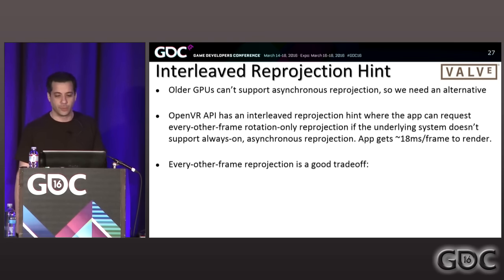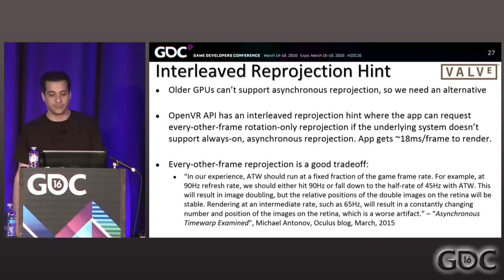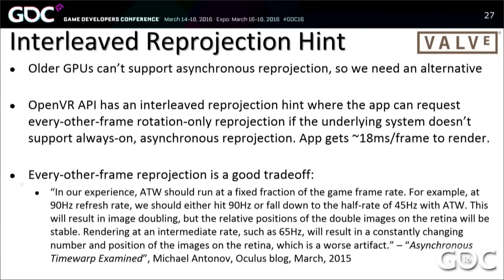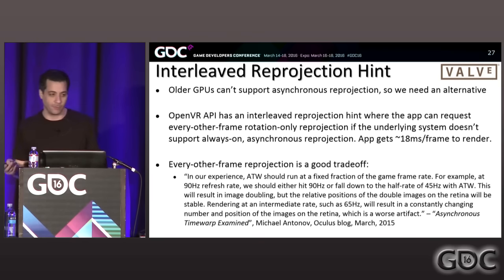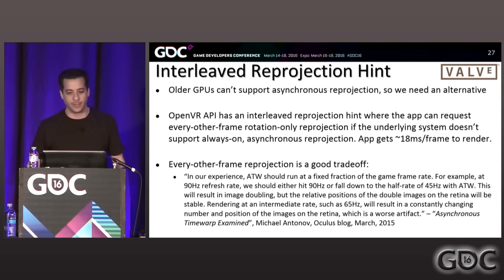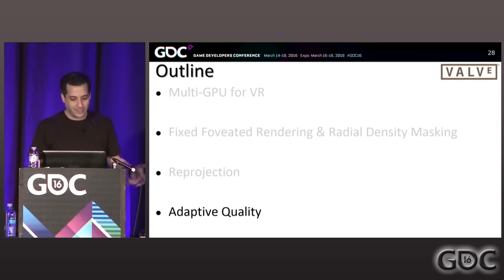Michael Antonov from Oculus wrote a great blog post titled 'Asynchronous Time Warp Examined.' His point is that asynchronous time warp should run at a fixed fraction of the game frame rate — at 90 Hz, you either hit 90 Hz or fall to 45 Hz. This results in stable image doubling judder with consistent ghost separation frame to frame. Targeting an intermediate or variable frame rate causes the judder ghost to jump all around, which is far worse. Interleaved reprojection filling dropped frames is the right approach when you need it.